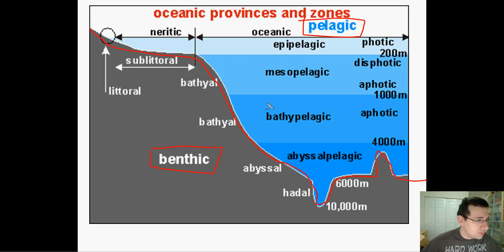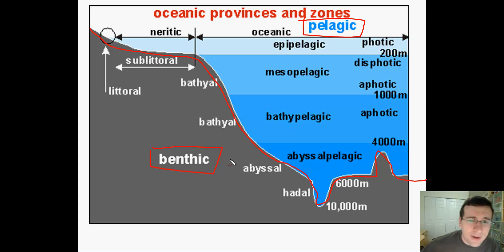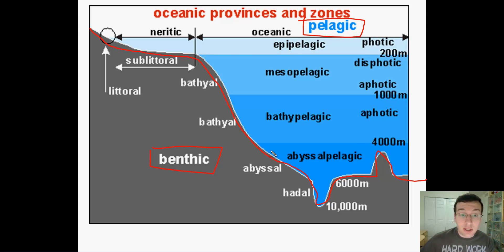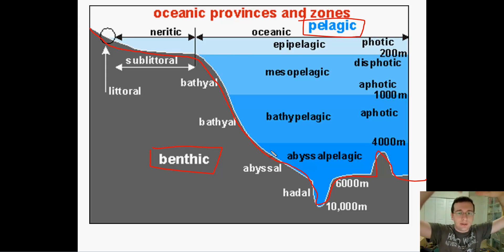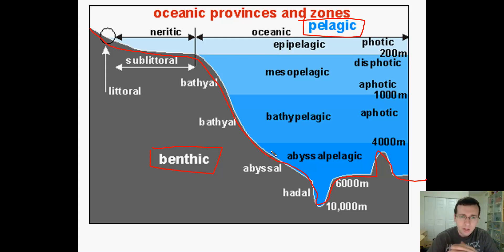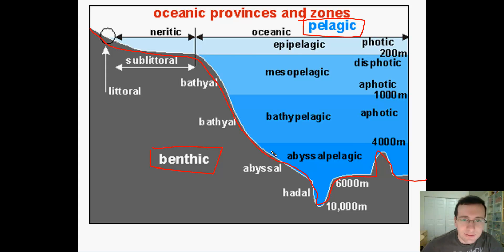Another major area is the bathyal zone — basically the zone along the continental slope. These are animals living attached to the steep incline of the ocean floor, and you won't find many animals there. Then you have the abyssal zone, referring to the abyssal plains, where you will find lots of life — especially decomposers eating things that fall from the surface all the way to the bottom, as well as volcanic bacteria living near mid-ocean ridges and seamounts.